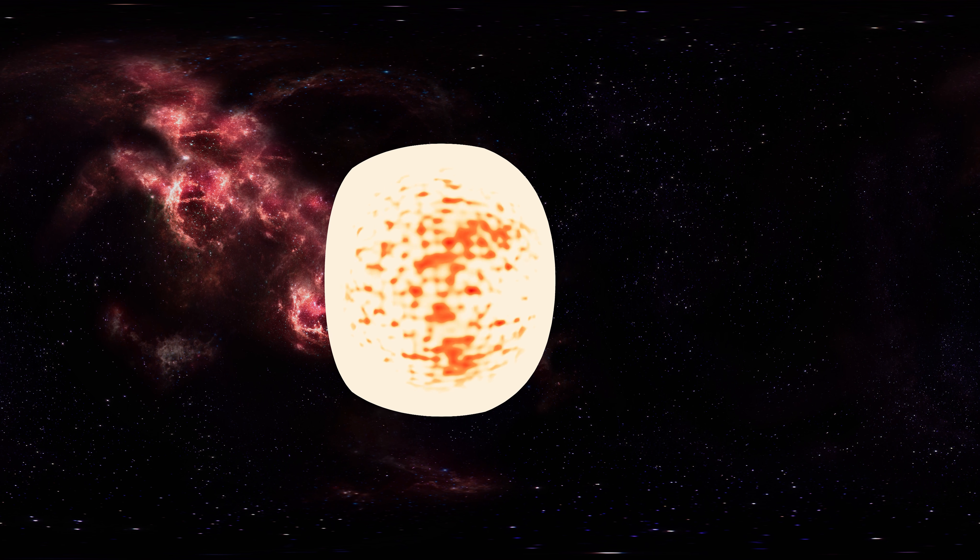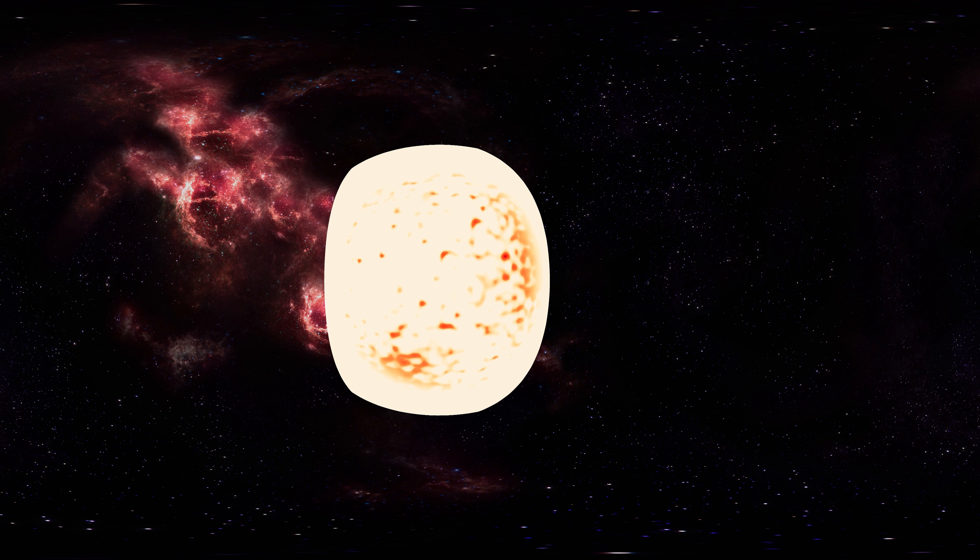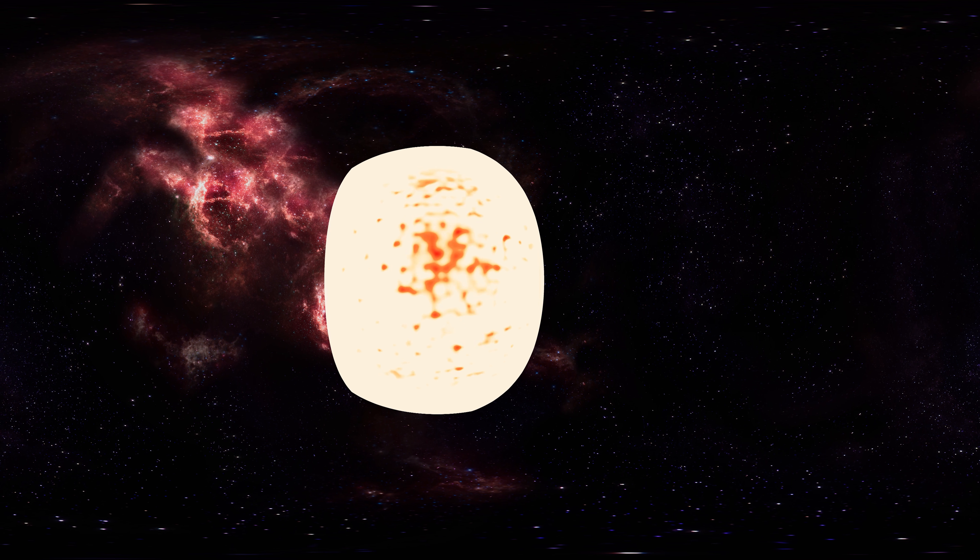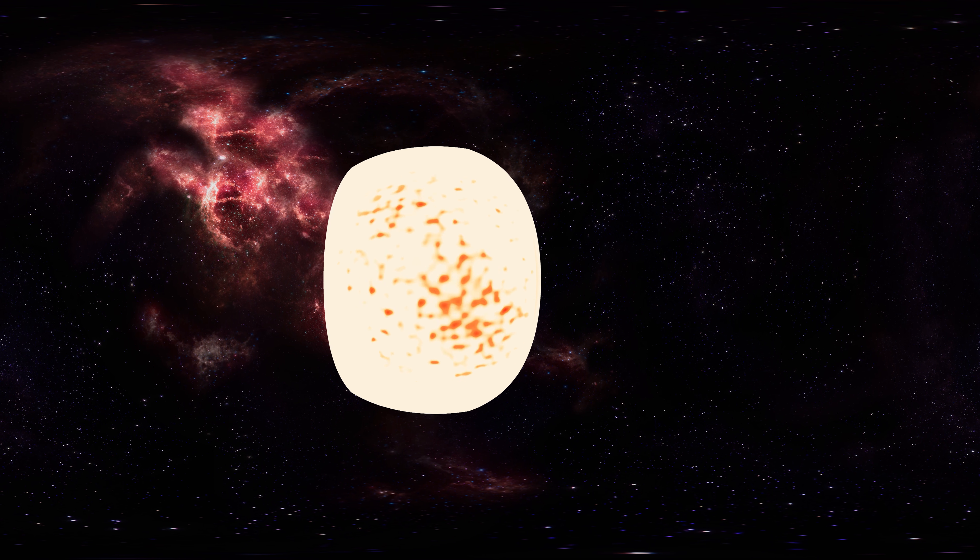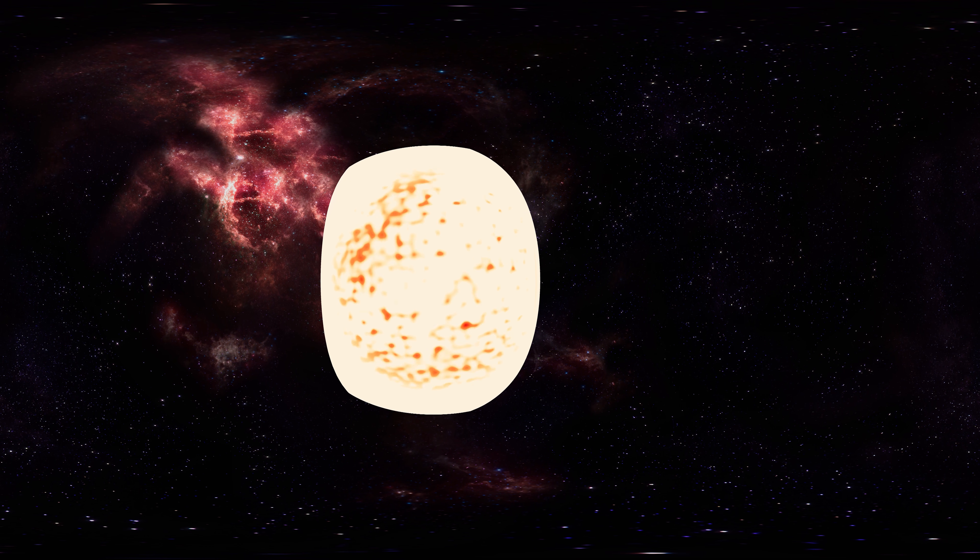The Sun's original chemical composition was inherited from the interstellar medium out of which it formed. Originally it contained about 71.1% hydrogen, 27.4% helium, and 1.5% heavier elements.